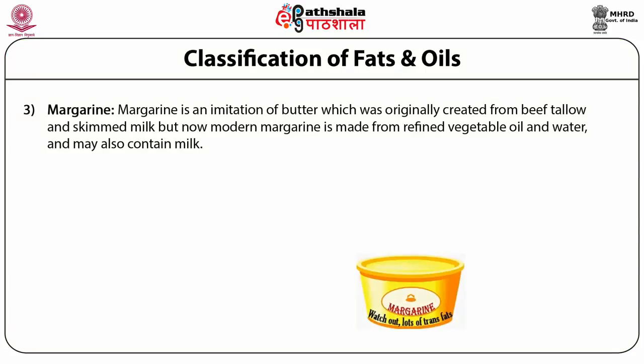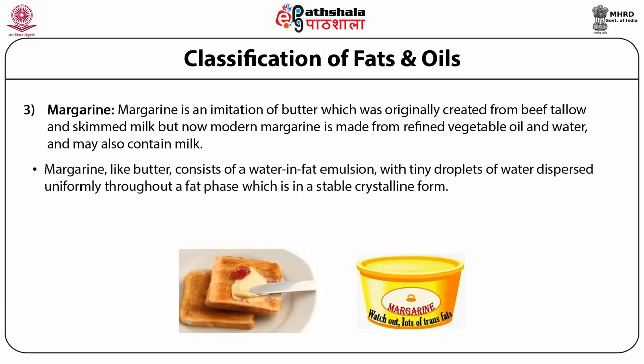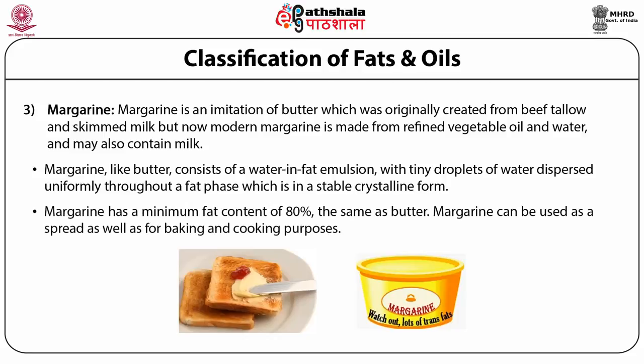Margarine is an imitation of butter, originally created from beef tallow and skimmed milk, but modern margarine is made from refined vegetable oil and water and may also contain some milk. Like butter, margarine consists of a water-in-fat emulsion with tiny droplets of water dispersed uniformly throughout a fat phase in stable crystalline form. Margarine has a minimum fat content of 80 percent — the same as butter — and can be used as a spread as well as for baking and cooking.